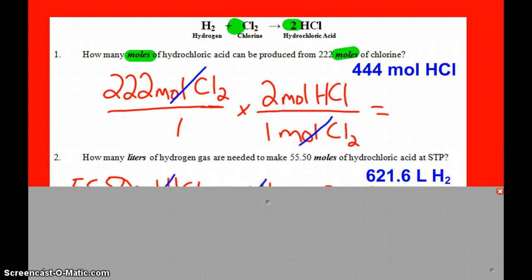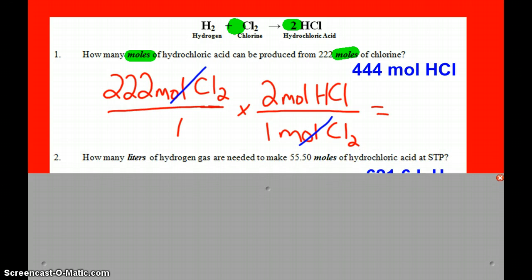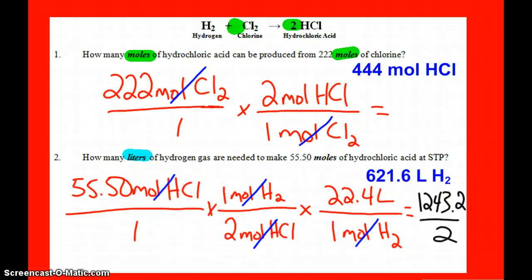Now for the second question, how many liters? Okay, liters is our new found information, that's where we're going to use 22.4. So if I have the 55.5 moles of hydrochloric acid, the mole ratio is 2 to 1 to figure out hydrogen. And then the last step is our new fact, 22.4 liters in a mole of hydrogen gas. And so that's how I got the 621.6 liters.